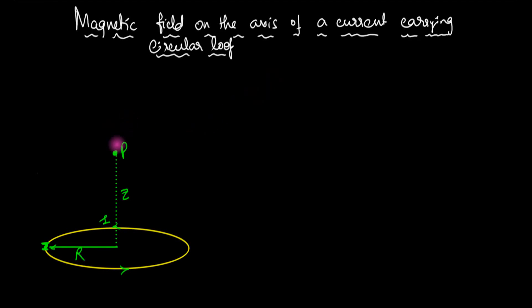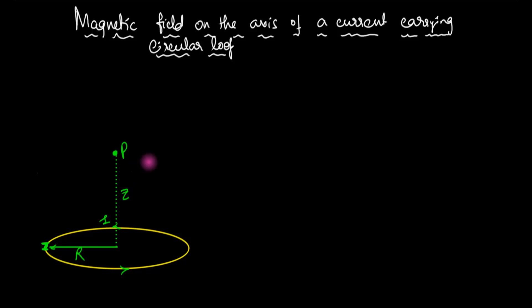Last time I gave you a homework, and that was to derive the expression for the magnetic field at point P due to a current-carrying loop which carries a current I. I hope you have done that. If you have not done it or if you have gotten stuck somewhere, this is a video to help you understand how we derive that. It's going to be actually simpler than what I did in my previous video when I calculated the magnetic field due to a square loop.